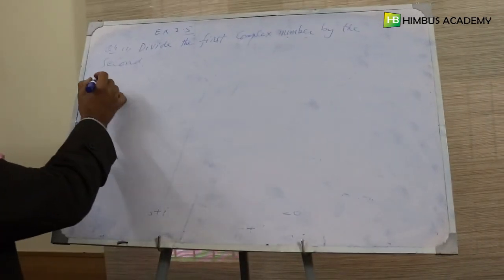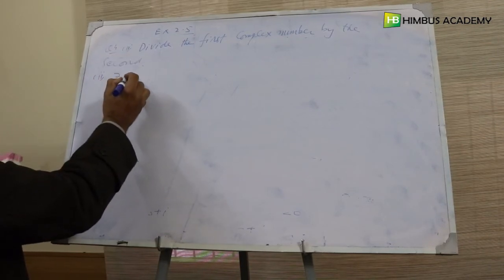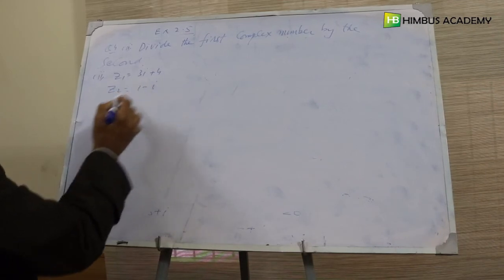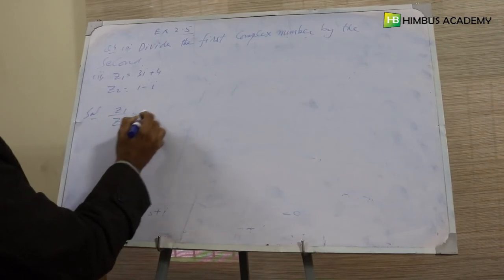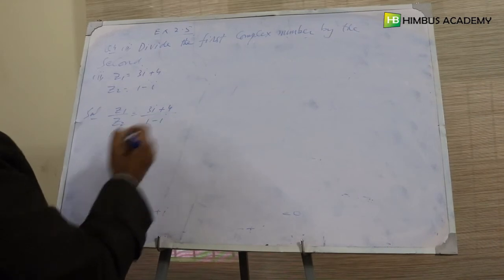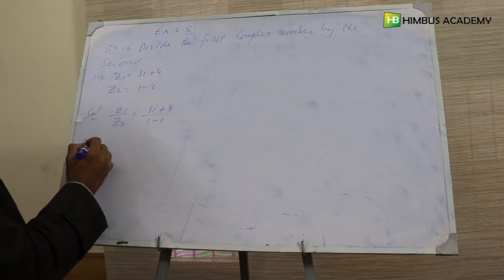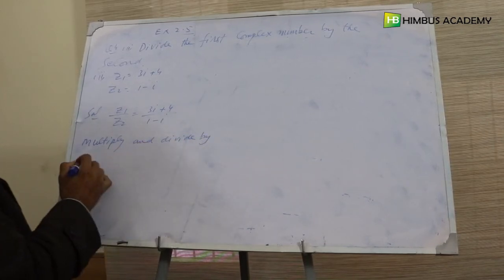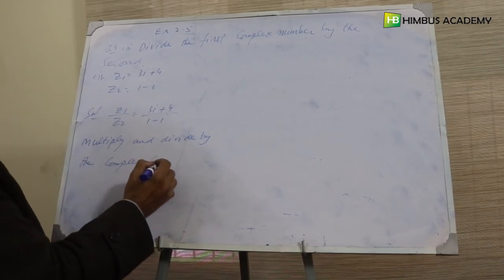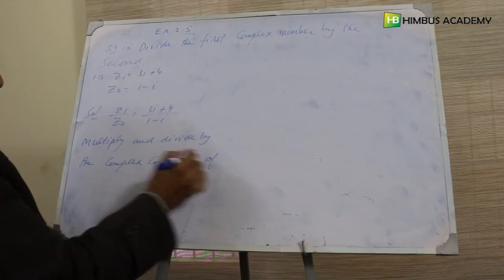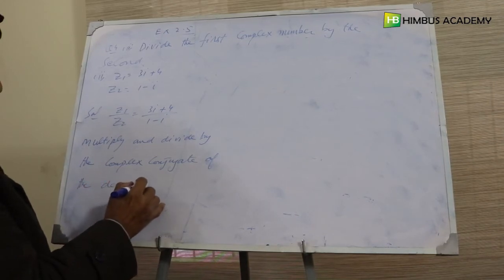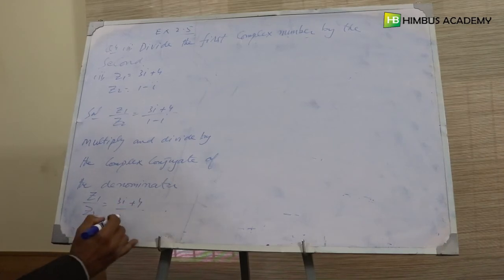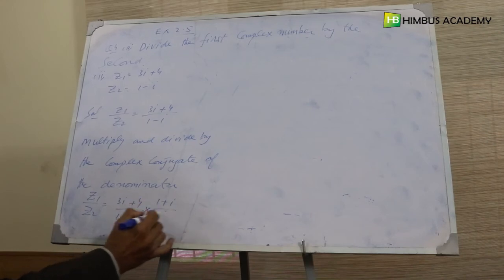Now the second part of question four. z1 equals three iota plus four, z2 equals one minus iota. So z1 by z2 is (three iota plus four) over (one minus iota). Just like before, we multiply and divide by the complex conjugate of the denominator. The conjugate of one minus iota is one plus iota. So z1 over z2 equals (three iota plus four) over (one minus iota), multiplied by (one plus iota) over (one plus iota).